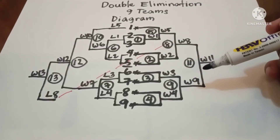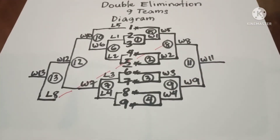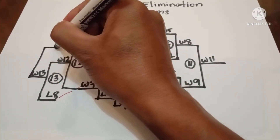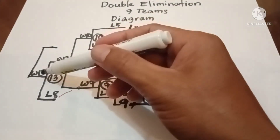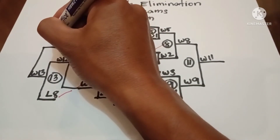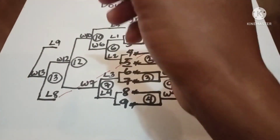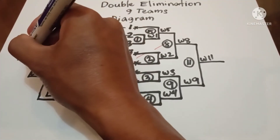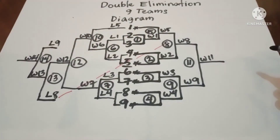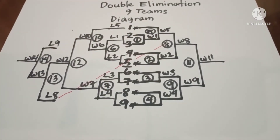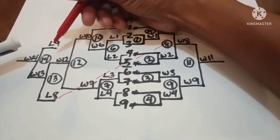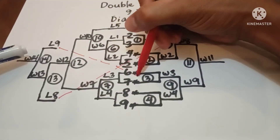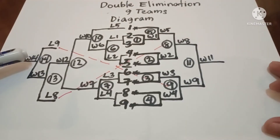Next is Loser 9. Loser 9 plays against Winner 13 in Game 14, giving us Winner 14. Once again, don't forget to write the broken line indicating Loser 9 from Game 9.